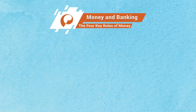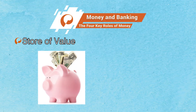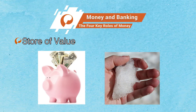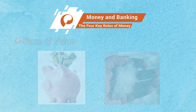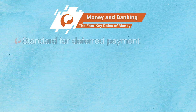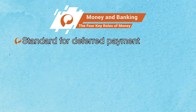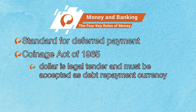Another role of money is store of value. An important feature of money is that people can save it for future purchases. If snowballs were used as money, our wages would melt before we could spend them. Money is also the standard for deferred payment — the unit we use to agree on the future repayment of a debt. In the United States, the Coinage Act of 1965 states that the dollar is legal tender and must be accepted as repayment for all debts. This is the main reason we use dollars as our money.